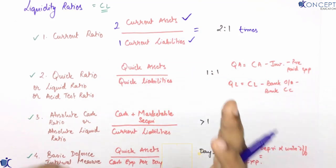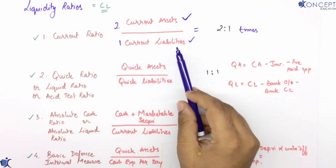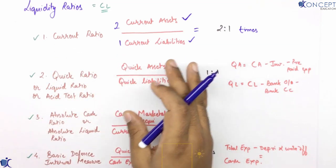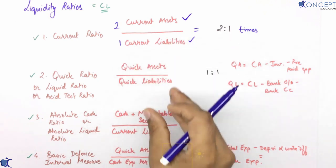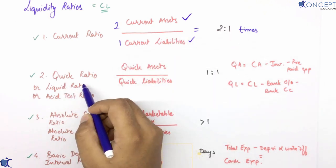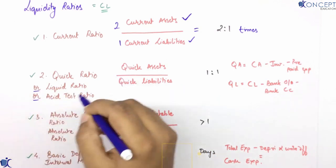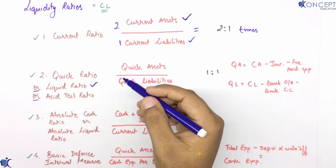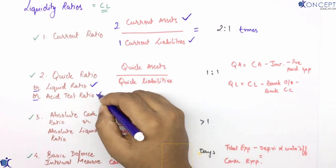Current assets was the most broader way of measuring liquidity. A narrower way is quick ratio. Quick ratio can also be called liquid ratio or acid test ratio — these are its two other names.